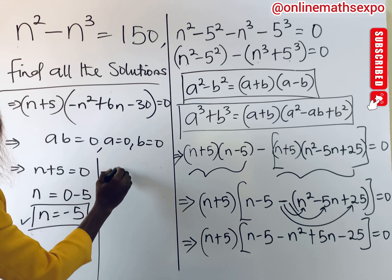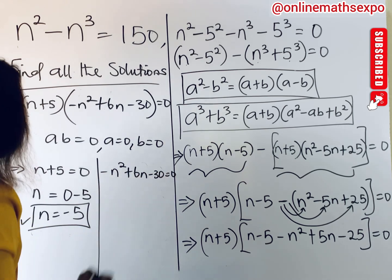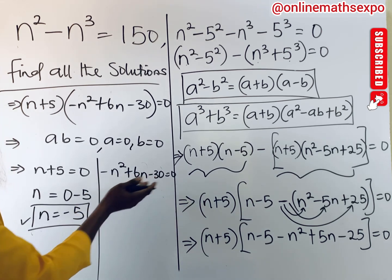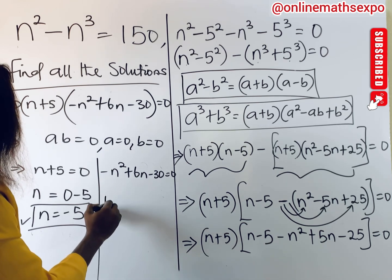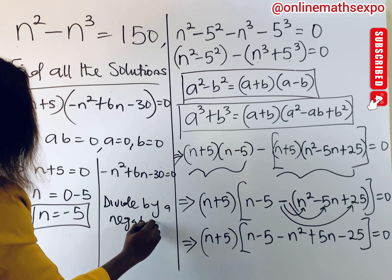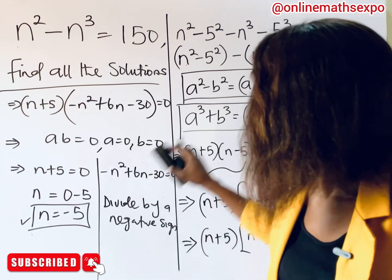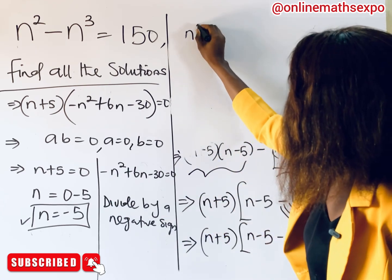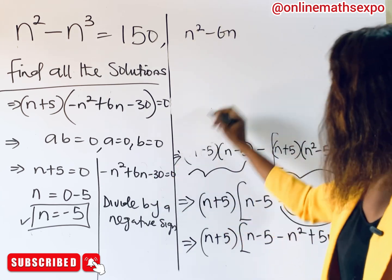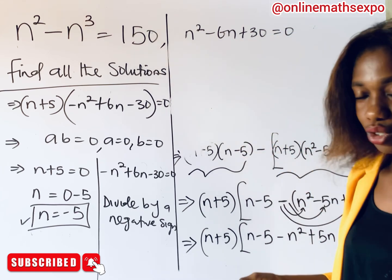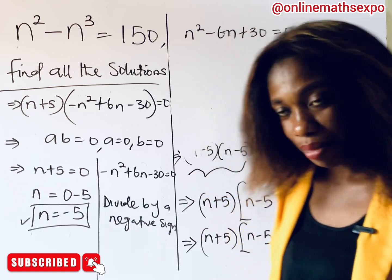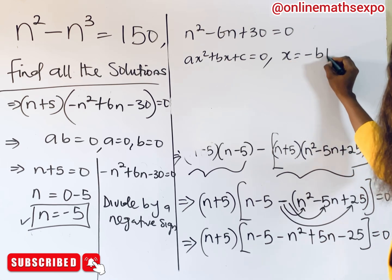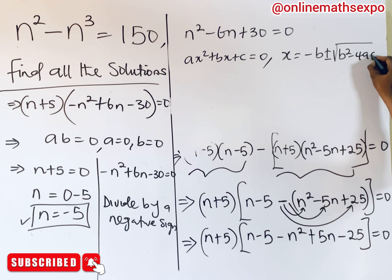Now for the quadratic part: negative n squared plus 6n minus 30 equals zero. To avoid the leading negative, divide each term by negative one, giving n squared minus 6n plus 30 equals zero. We solve this using the quadratic formula: if ax squared plus bx plus c equals zero, then x equals negative b plus or minus the square root of b squared minus 4ac, all over 2a.